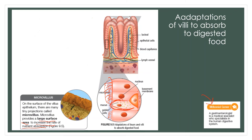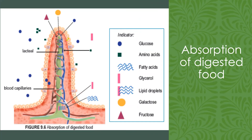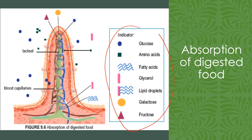Just for your information, a medical specialist who specializes in the human digestive system is known as a gastroenterologist. In this picture you see a cross-section of a villus. These substances are all the products from food digestion — they are already in simpler form: glucose, amino acid, fatty acid, glycerol, lipid droplets, galactose, and fructose.